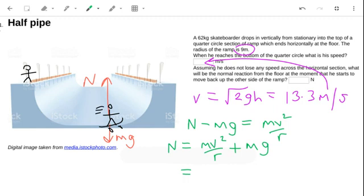So using the earlier velocity, the radius is 9 meters, and the mass is 62 kg. I need to do 62 times 13.3 squared divided by 9, and I'm going to add that to 62 times 9.81, and that gives me 1824 newtons.